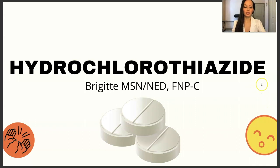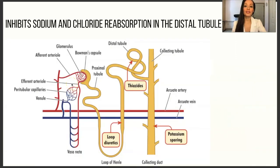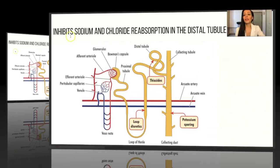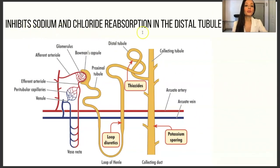Hydrochlorothiazide — a lot of times you'll see it abbreviated as HCTZ. Hydrochlorothiazide is a thiazide diuretic; the name indicates the drug class. It helps with hypertension and diuresis. The way it works is that it inhibits sodium and chloride reabsorption in the distal tubule. Loop diuretics work in a different segment, potassium-sparing diuretics like aldactone work in another area, and thiazide diuretics work in the distal tubule.